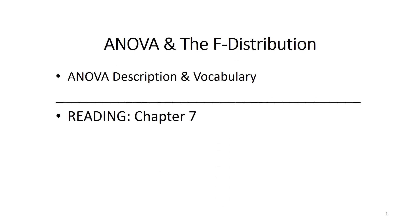Welcome back everyone. In this lecture we're going to discuss ANOVA and the F-distribution. This is going to be a relatively short lecture, just introducing ourselves to a new distribution. We just finished talking about the T-distribution and we saw how it was a derivative of the Z-distribution. The F-distribution is just the next step in the statistical distributions we need to cover this semester. We're going to talk about what is ANOVA, what is the F-distribution, as well as introduce some necessary vocabulary for different statistical tests using ANOVA. The reading for this lecture is Chapter 7 from the 4th edition of your course textbook.